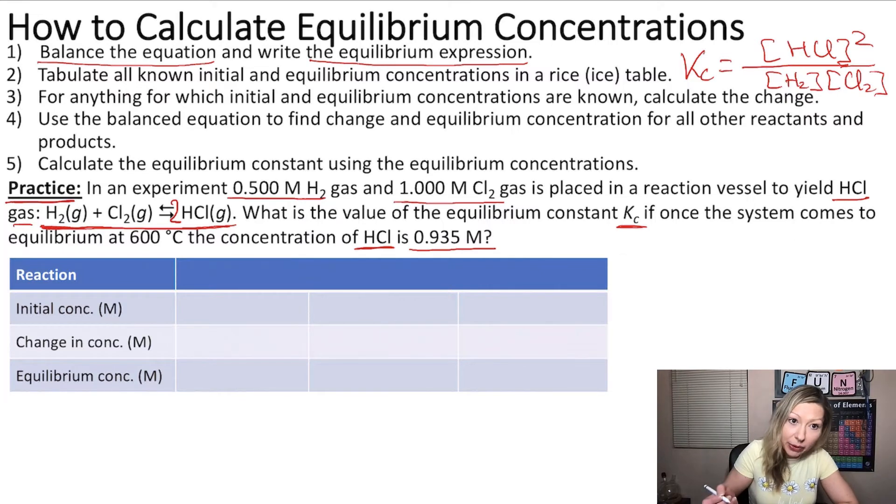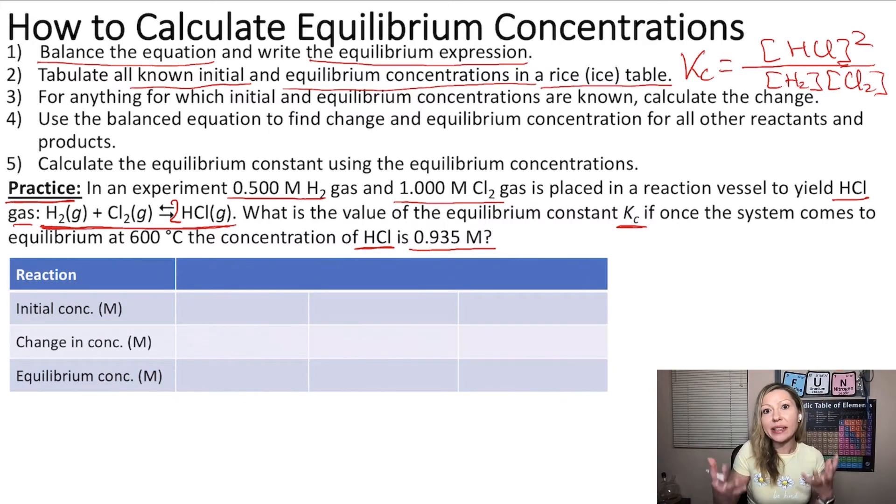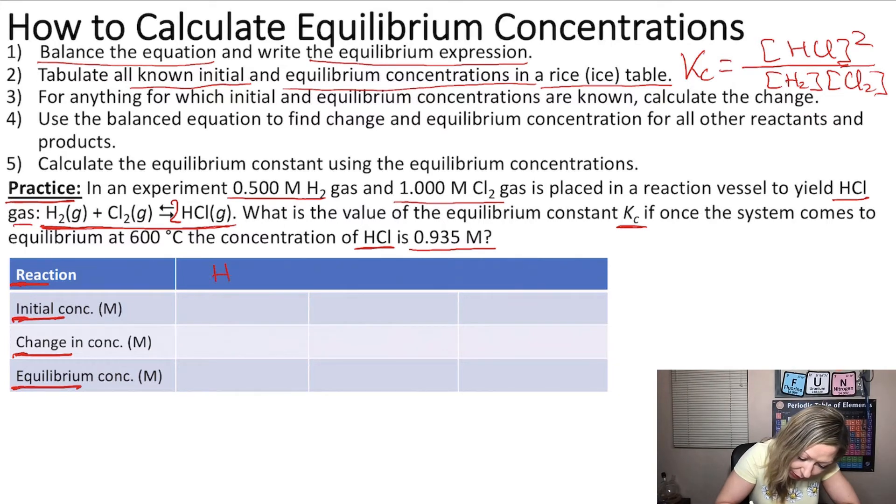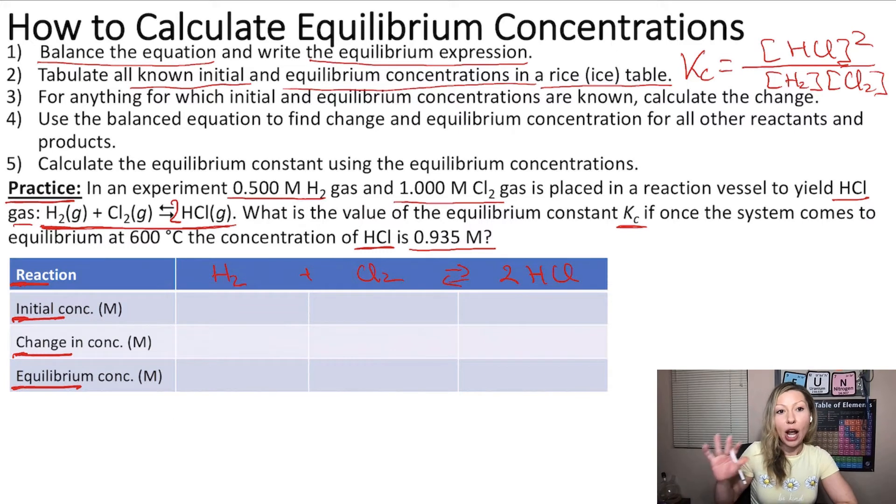Now we need to tabulate all known initial and equilibrium concentrations in a so-called RICE or ICE table. The table's name is coming from the parts that you have in this table. We are going to show the reaction, the initial concentration, the change in concentration, and the equilibrium concentration. The first letters give us the acronym RICE. First of all, let's write out the reaction. So we have H2 plus Cl2 giving us 2 mols of HCl.